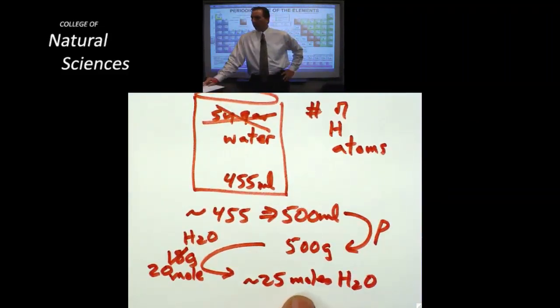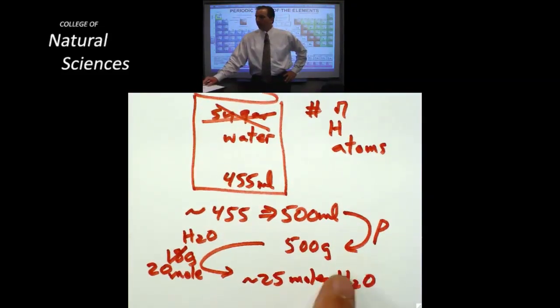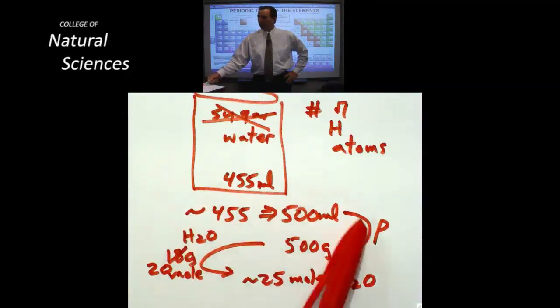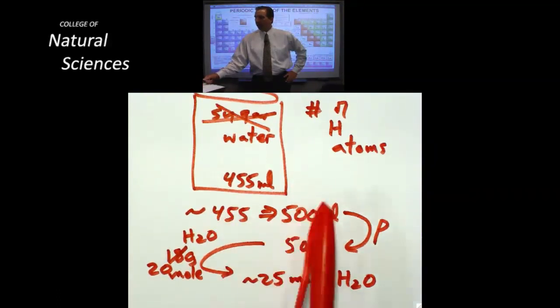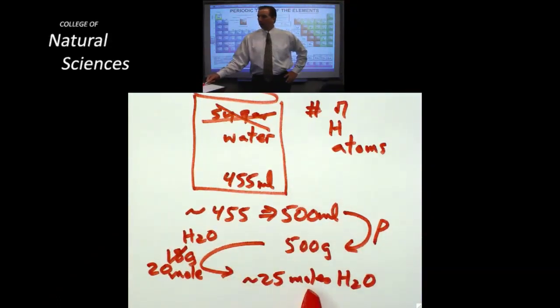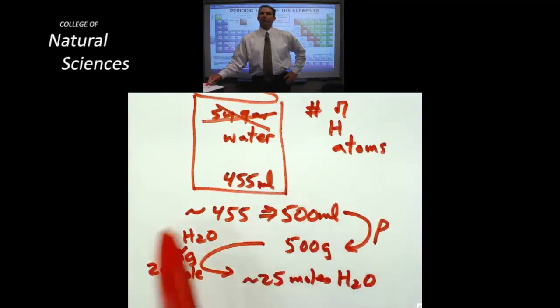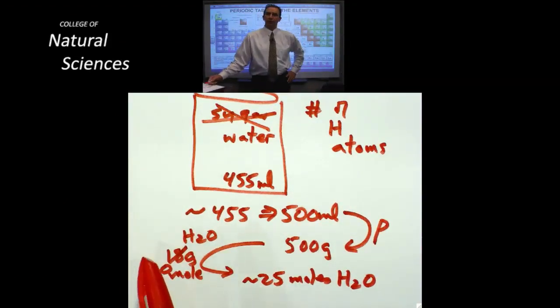Well if there is 25 moles of water sitting in that container approximately then I am getting pretty darn close to knowing the number of hydrogen atoms. I should point out by the way that as I am making these estimates there is this kind of neat thing. Notice that this estimate I went a little high and that when I did this division I went a little low. Everything is tending to cancel each other out. So I am going to end up with a pretty good number when I am through.